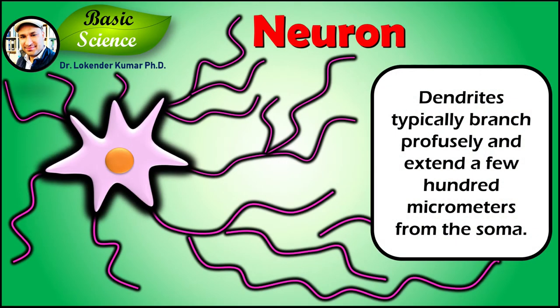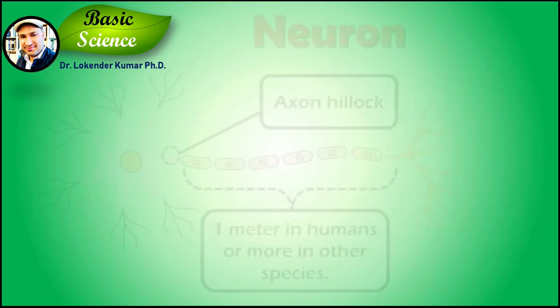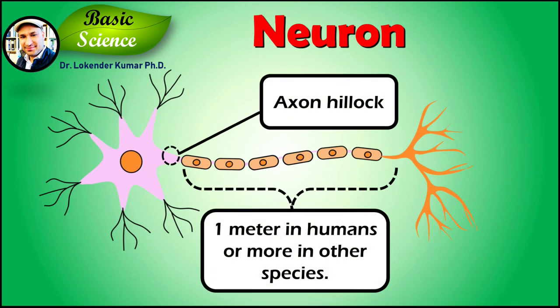Dendrites typically branch profusely and extend a few hundred micrometers from the soma. The axon leaves the soma at a swelling called the axon hillock and travels as far as one meter in humans or more in other species.